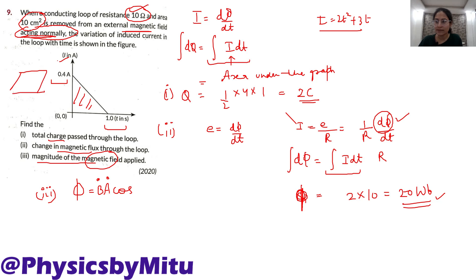So agar ye loop hai, this is the magnetic field. Area vector is perpendicular to the loop. So area vector and magnetic field are parallel vectors. So theta ho ga zero, cos zero.